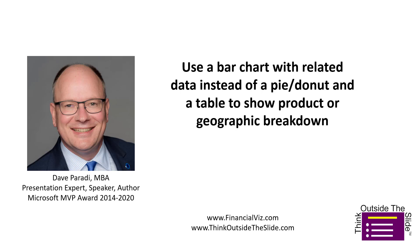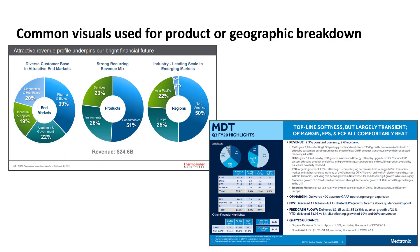When you need to show a product or geographic breakdown of financial results, I'm going to suggest in this video that you use a bar chart that has related data underneath it, instead of the typical pie or donut chart. This is a very common way that organizations show product or geographic breakdown. Here are a couple of examples from the medical device or pharmaceutical industry — one is a donut, one is a pie chart.